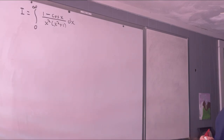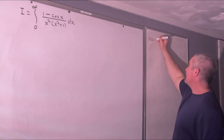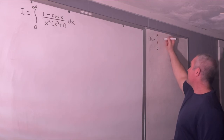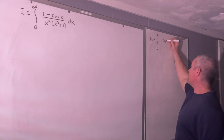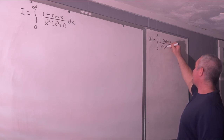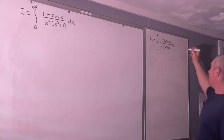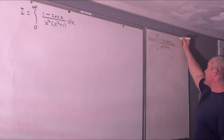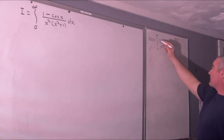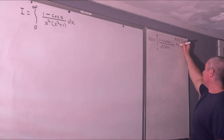Let's get started. We're doing Feynman integration, so our first step is to create a function of t that closely resembles the integral. We let f(t) equal the integral from 0 to infinity of (1 minus cosine(tx)) over x²(x² + 1) dx. The motivation is that we can take derivatives to cancel the x's. Evaluating at t=1 gives our original integral, and at t=0 gives 0.